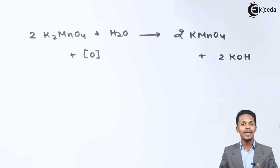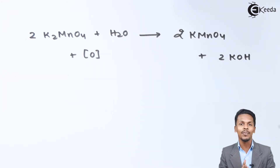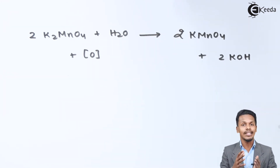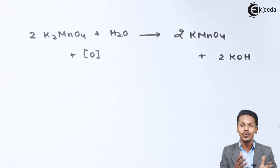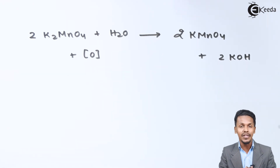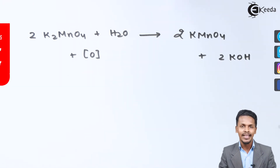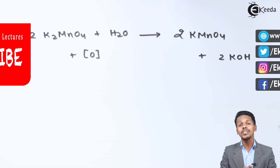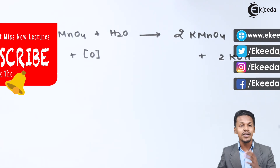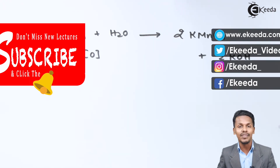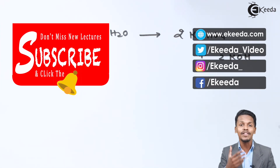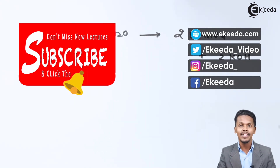So that was the method to obtain KMnO4 — the preparation of KMnO4 from its ore using different reagents. Thank you friends for watching this video. I hope you have understood this reaction very clearly. Don't forget to subscribe to the Ekida channel.